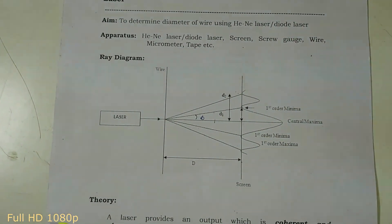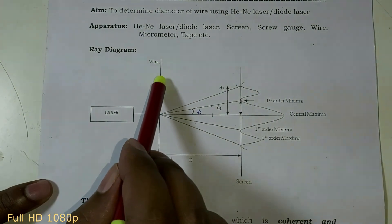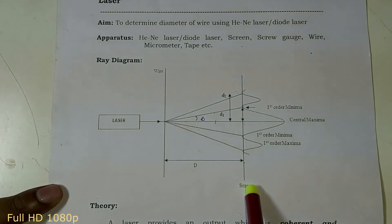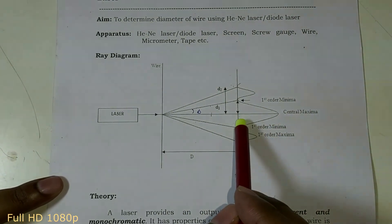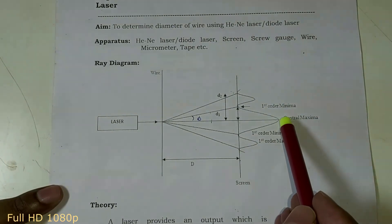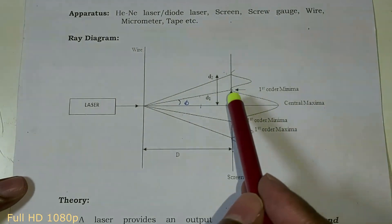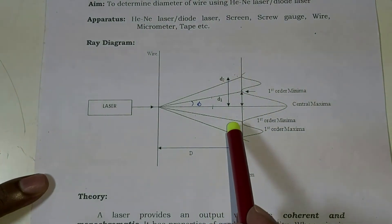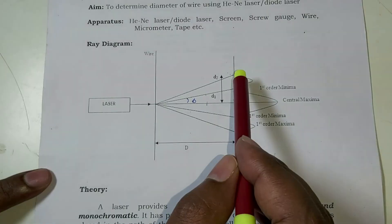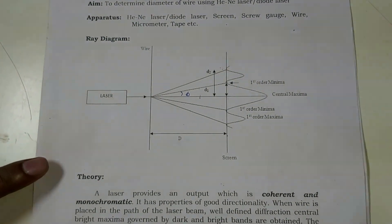We will understand the ray diagram for this experiment. The laser beam is coming out, and the wire is kept vertically. You will get the diffracted beam and see it on the screen. The distance between wire and screen is capital D. On the screen you will see the single slit diffraction pattern — a central maximum, then first order minimum, first order maximum, and so on on both sides. We measure distances d1, d2, etc. d1 is the distance of the first order minimum from the central maximum, and d2 is the distance of the second order minimum from the central maximum.